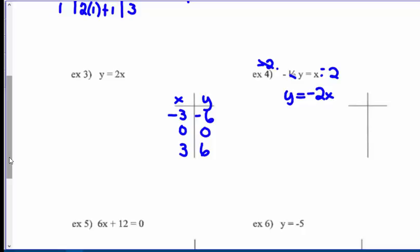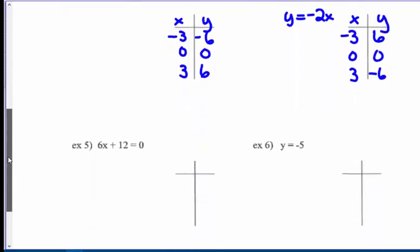Well, I had y equals positive 2x in number 3. I'm going to choose the same three values for x, negative 3, 0, and positive 3. Negative 2 times negative 3 gives me positive 6. Negative 2 times 0 gives me 0, and negative 2 times positive 3 gives me negative 6. So you can see they're very similar, question 3 and 4.